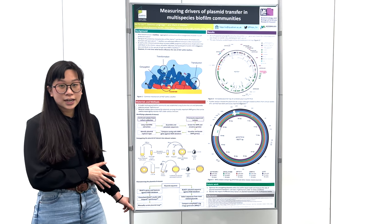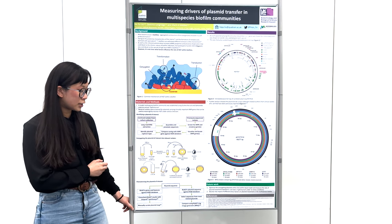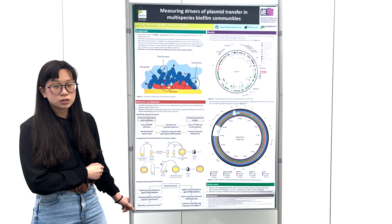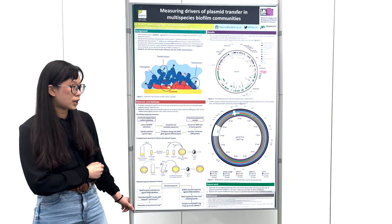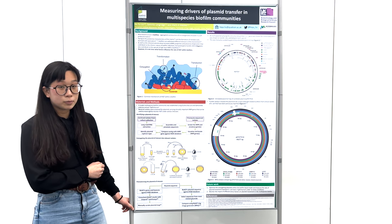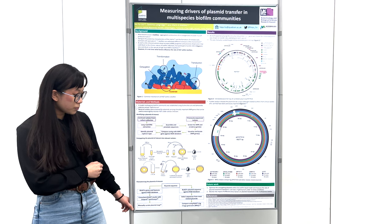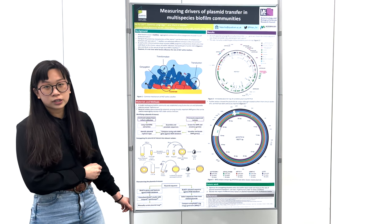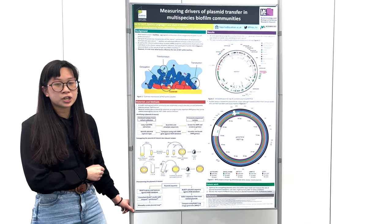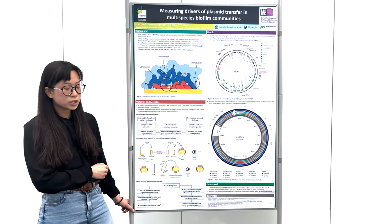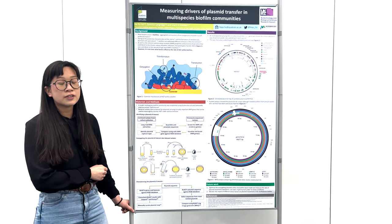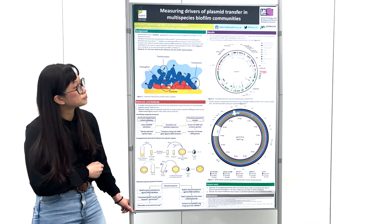Once I picked a candidate plasmid, I then conjugated this into relevant species of my E. coli and Salmonella Typhimurium multispecies biofilm. I also characterized the plasmid of interest by manually curating a plasmid map of all the features, and I also looked at the evolutionary history of this plasmid.